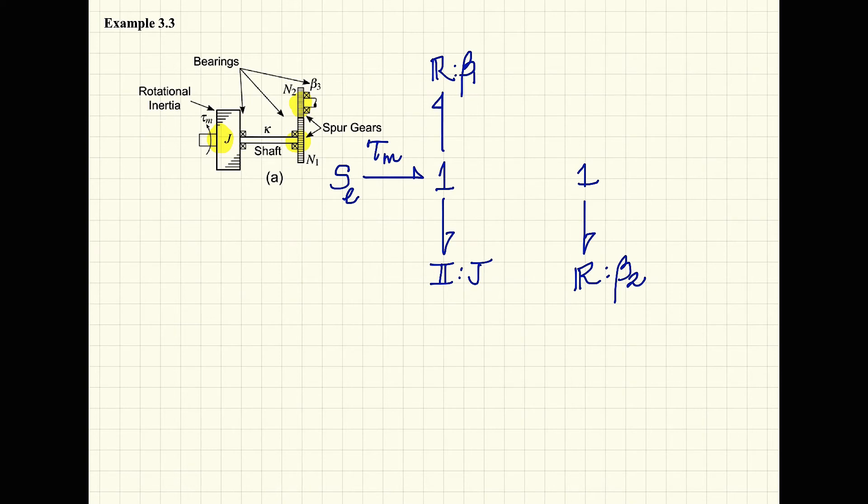I have one more one junction. At this one junction, I just have a bearing, and this bearing has a rotational damping constant of beta 3.